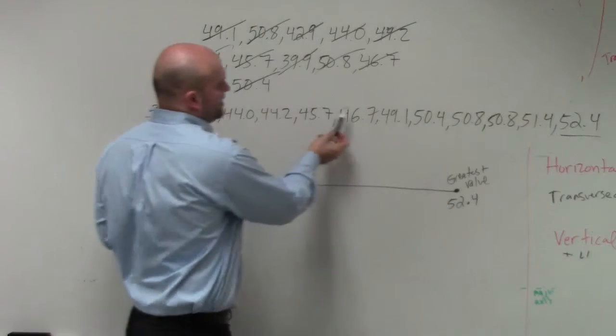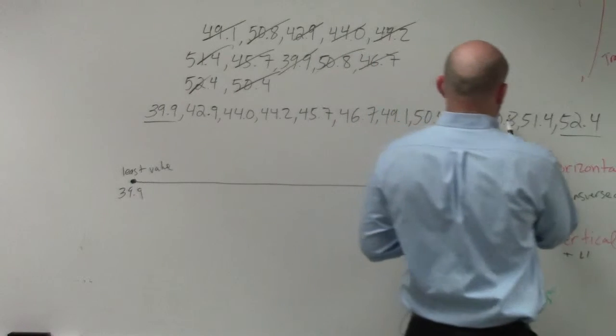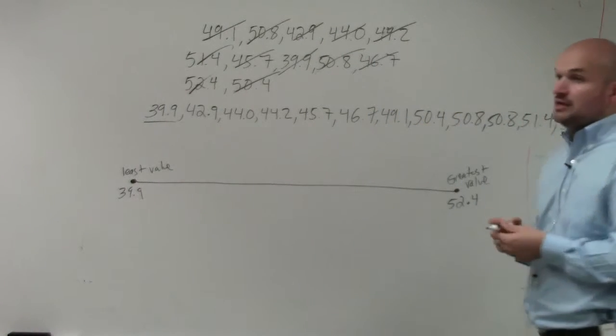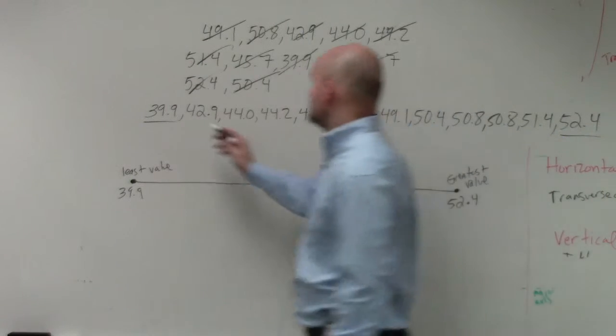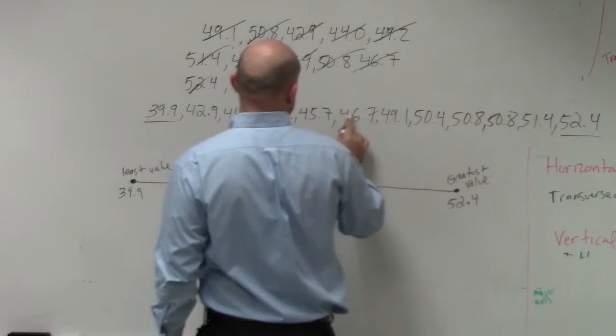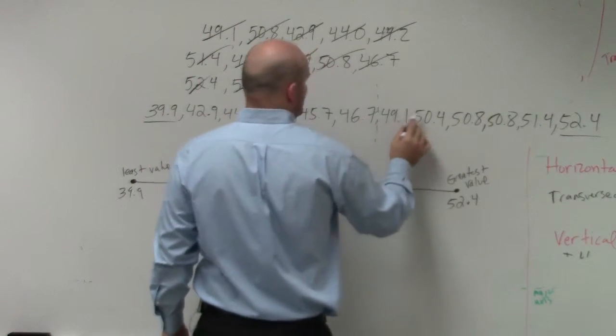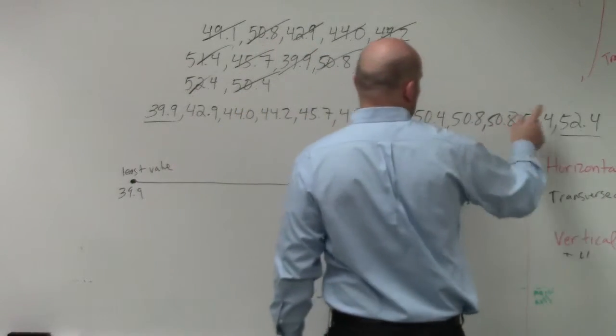So I see that I have 1, 2, 3, 4, 5, 6, 7, 8, 9, 10, 11, 12. So therefore, 6 and 6 would split it halfway, right? So 1, 2, 3, 4, 5, 6. 1, 2, 3, 4, 5, 6.